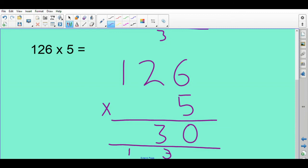So we carry the 1 into the next column. 1 times 5 is 5. Add 1 is 6. 630.